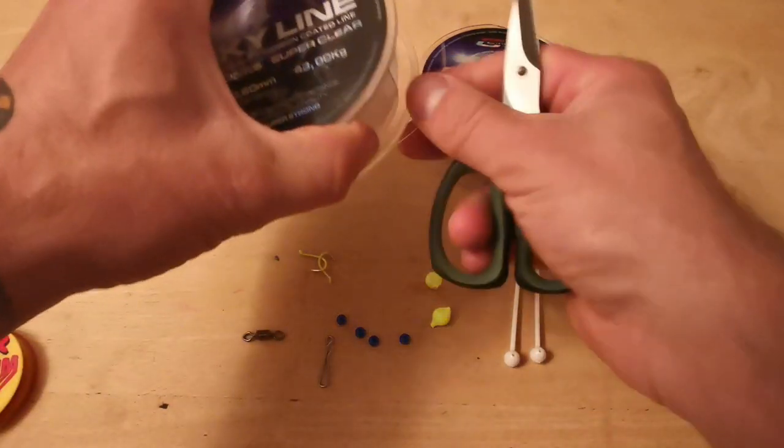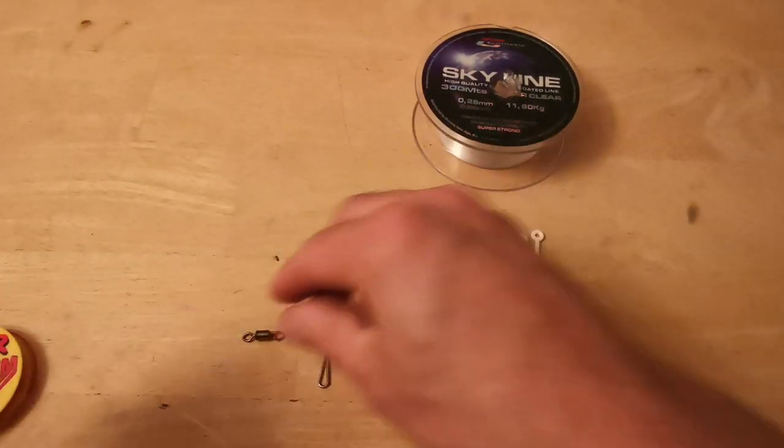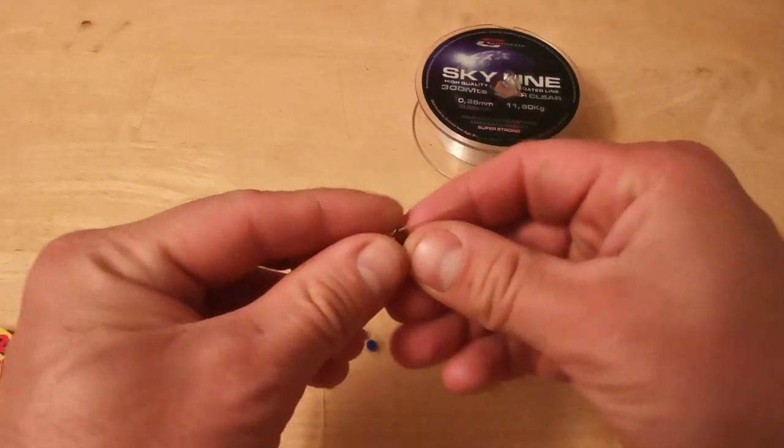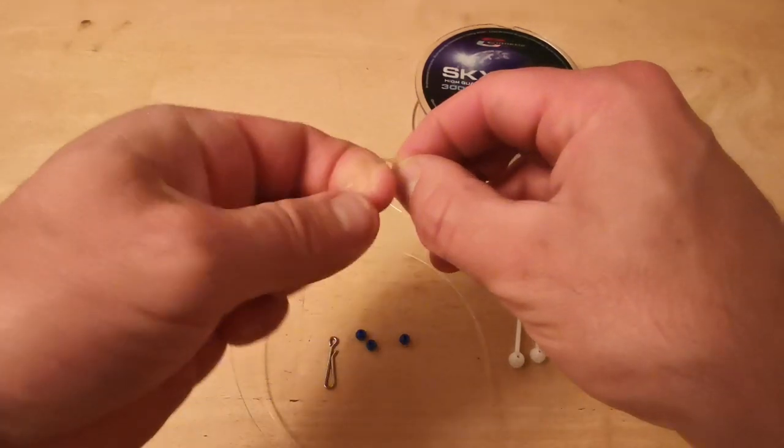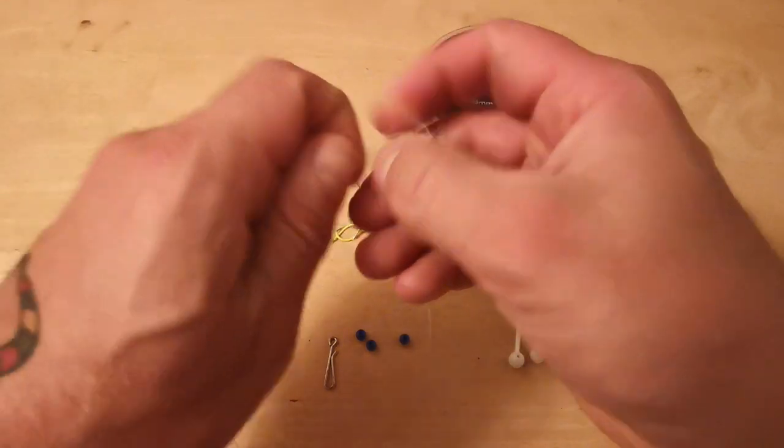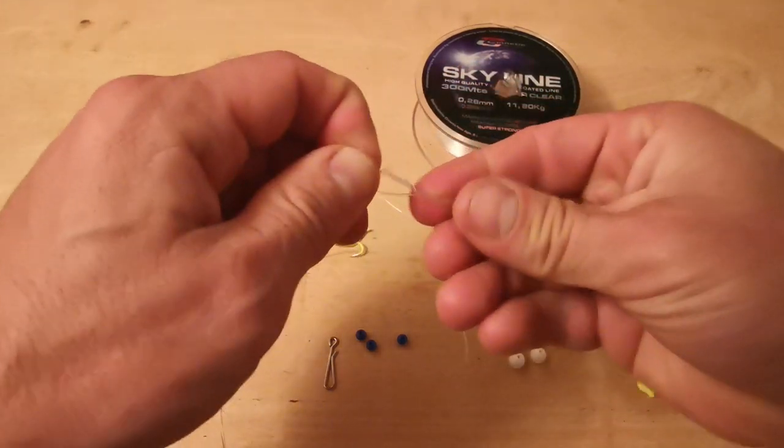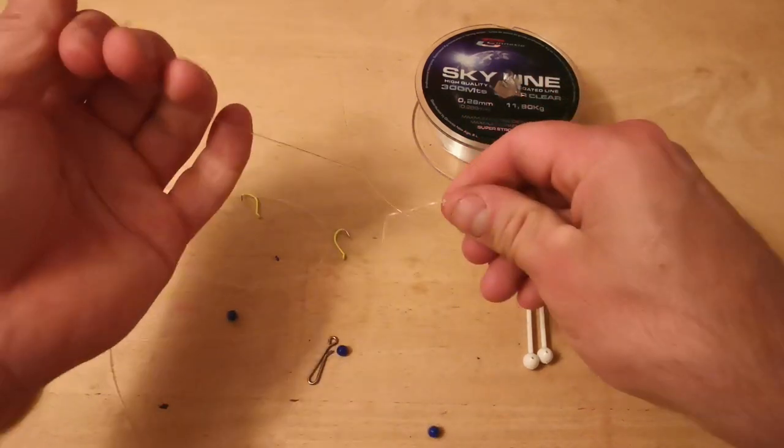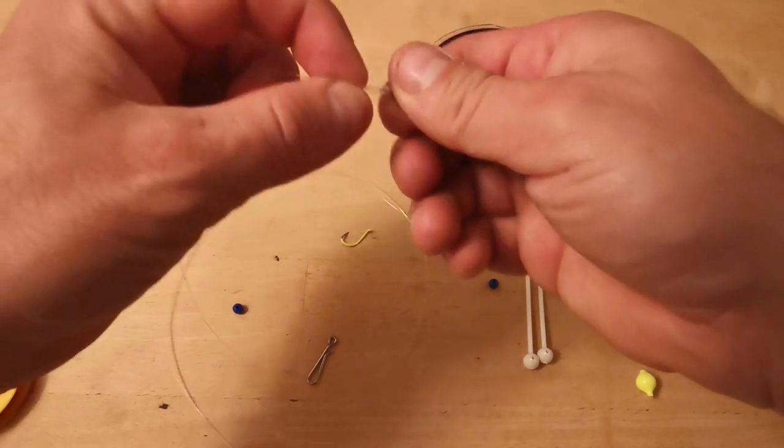The first thing I'm going to do is cut a length of 43kg and we're going to cut this to a meter. Then using a uni knot, I'm going to tie the swivel to one end. Four turn uni knot on this line - quite thick, four turns will be more than enough. You can then trim off the tag end.